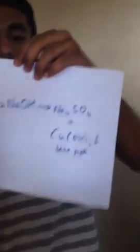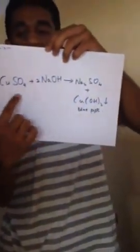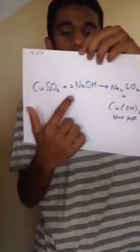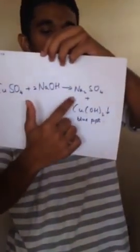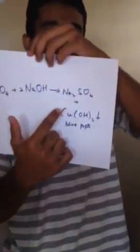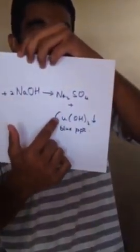Basically, what is going on in this reaction is: one mole of copper sulfate reacting with two moles of sodium hydroxide giving rise to one mole of sodium sulfate plus one mole of copper hydroxide. This copper hydroxide is the blue color precipitate which is being settled down, and this sodium sulfate remains dissolved in the solution.